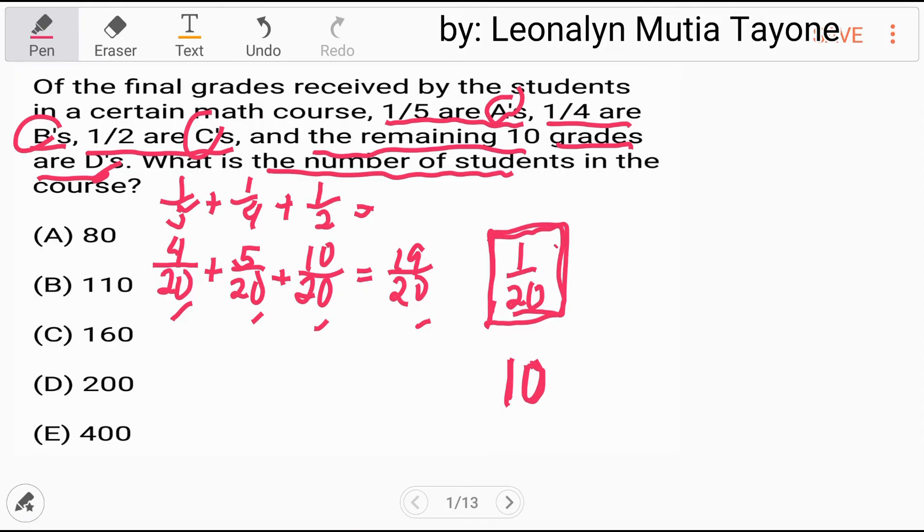Kung 10 yan, 1 over 20 is equals to 10. So obviously, itong 19 over 20, that is 190. Kung i-add mo yan, that is 200. Tapos kung sakaling hanapan kayo, kung ilan yung mga estudyante na A's, B's, at C's. Now, ang gagawin mo lang ay itong 10 na to, i-multiply mo sa 4, that is 40. Tapos i-multiply mo sa 5, that is 50. I-multiply mo sa 10, and that is 100.